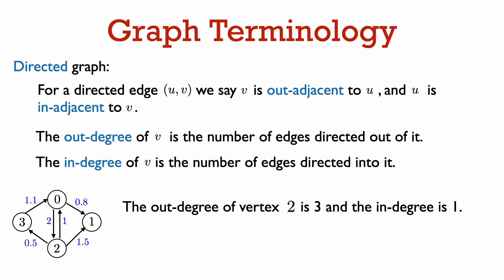Now let's go over terminology for a directed graph. For a directed edge from u to v, we say that v is out-adjacent to u and u is in-adjacent to v. The out-degree of a vertex is the number of edges directed out of it, and the in-degree is the number of edges directed into it. In the small example shown, the out-degree of vertex 2 is 3 and the in-degree is 1.